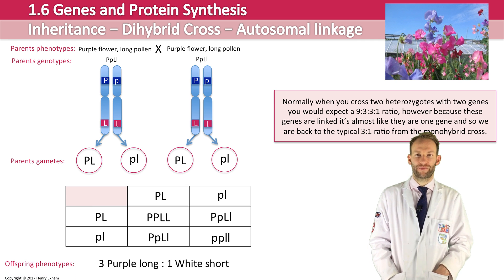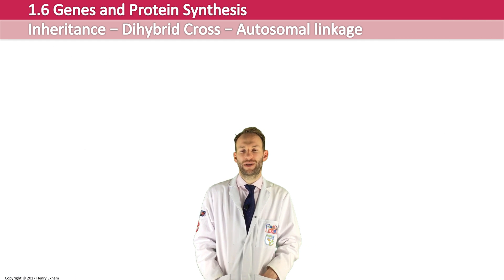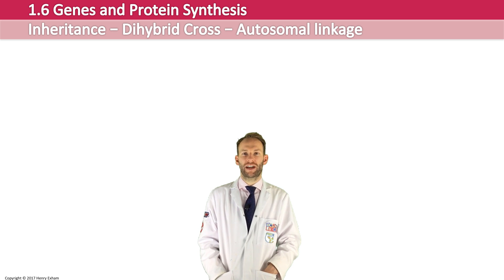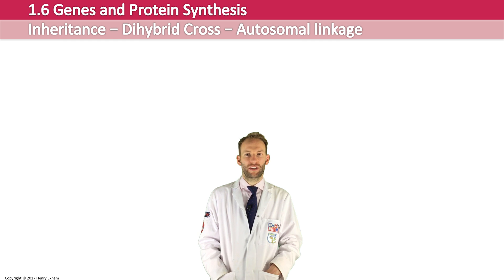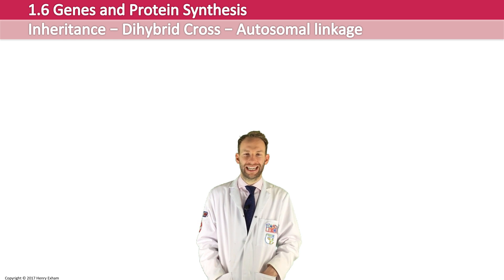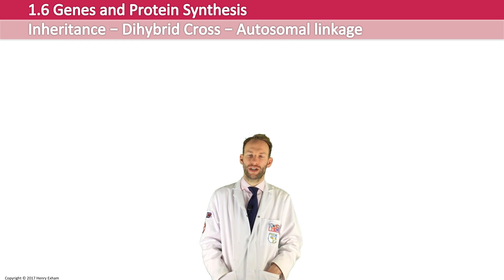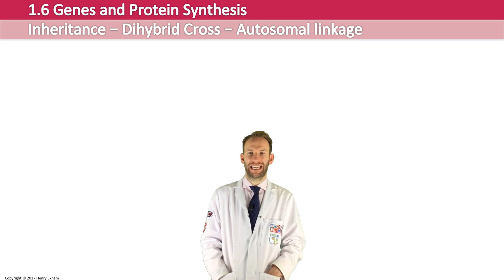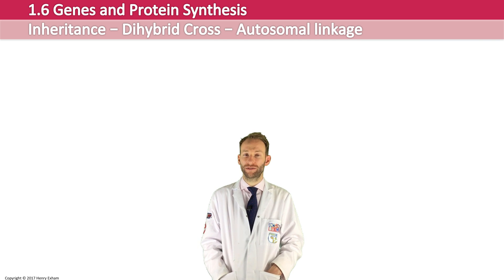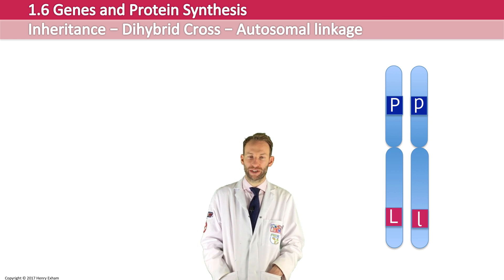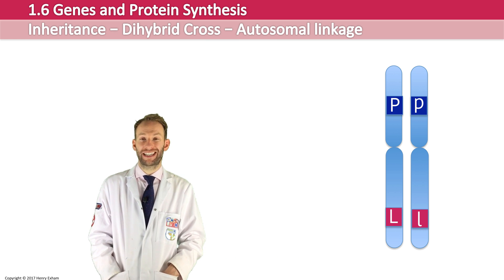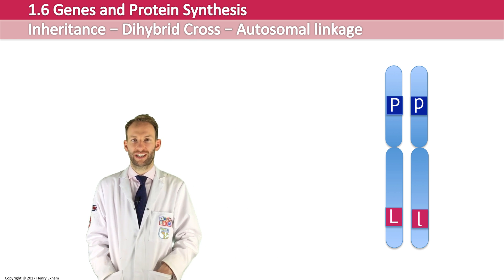The same cross was done again with two heterozygous sweet peas, but this time there were some purple short and some white long individuals in the offspring — phenotypes we didn't see before. We only expected purple long and white short. How could that possibly happen? We're forgetting one other process that occurs in meiosis that can interfere with linkage, and that is called crossing over.